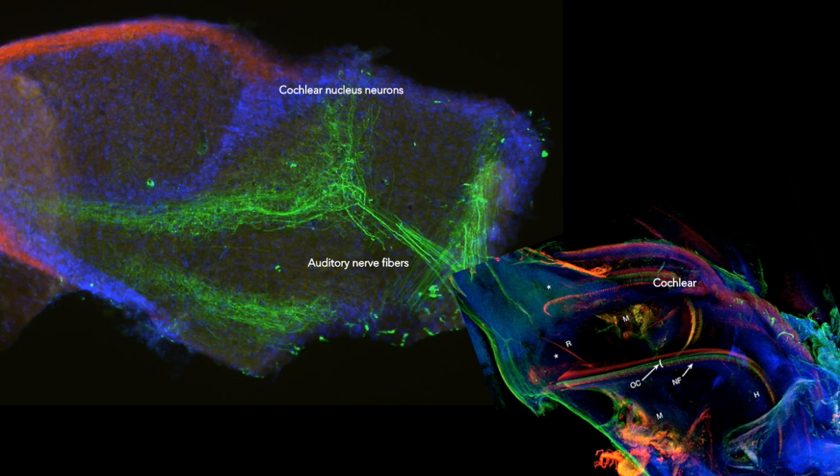The hair cell's job is to change the vibration into electrical potential, and the neuron's job is to change the electrical potential into the target sound impression.